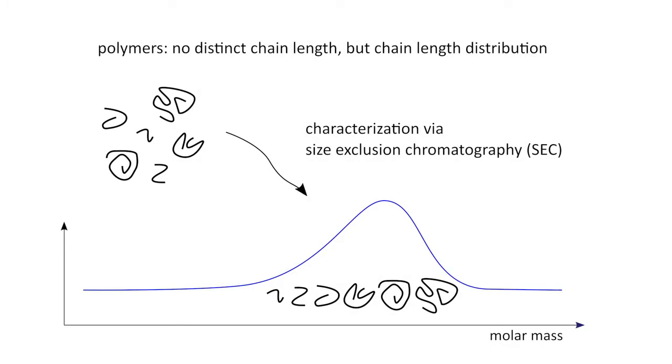Usually polymers are characterized regarding their molar mass distribution, because this is a very important property almost every polymer has. A polymer does not have one distinct chain length but a chain length distribution, and in order to correctly characterize those polymers, size exclusion chromatography is usually used.